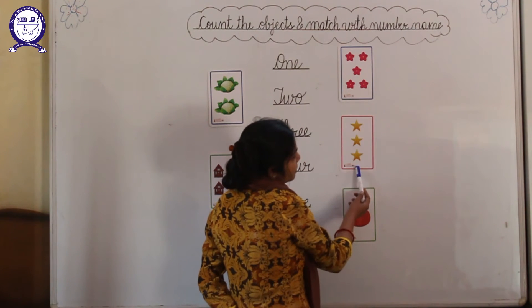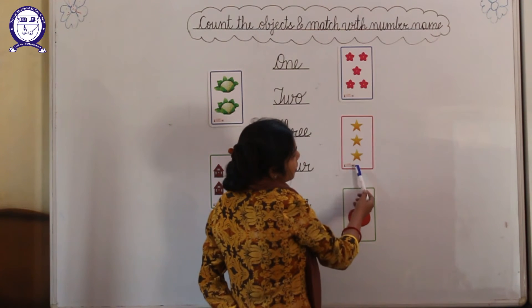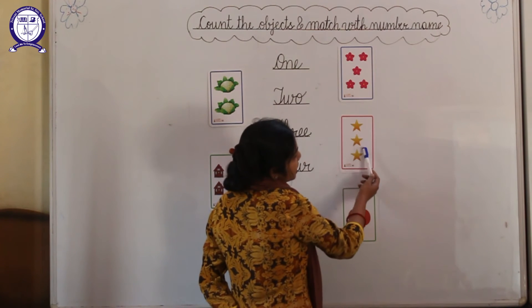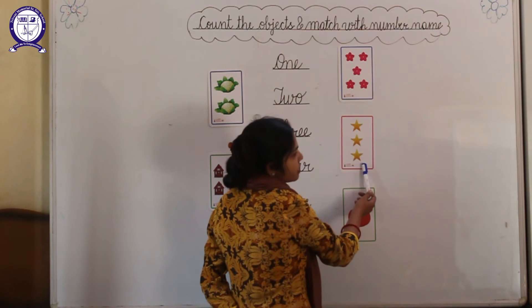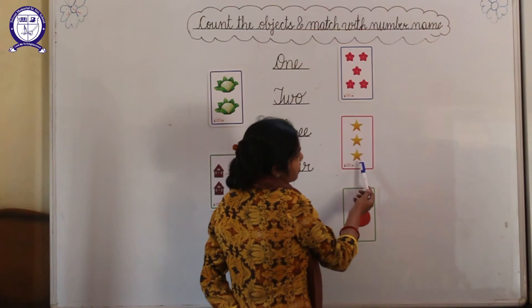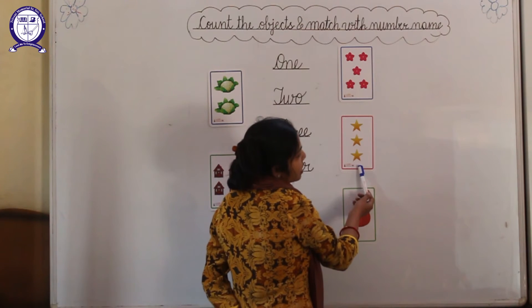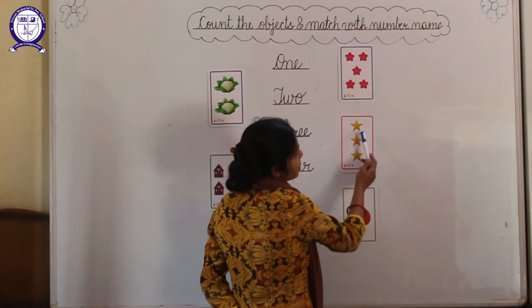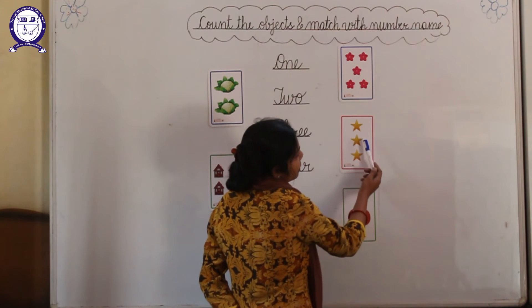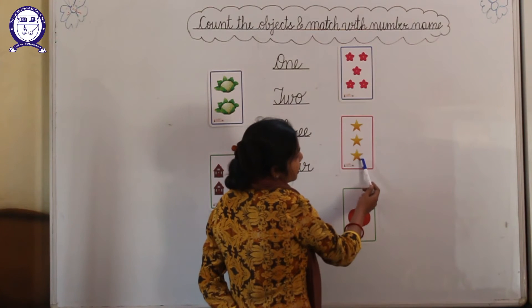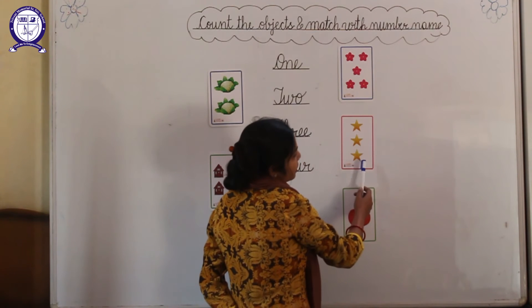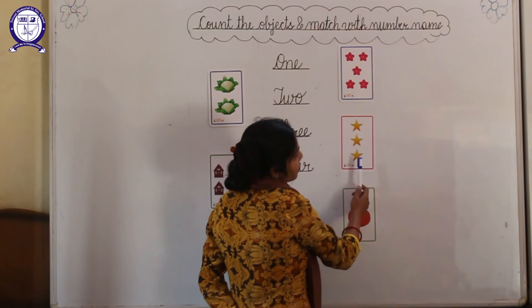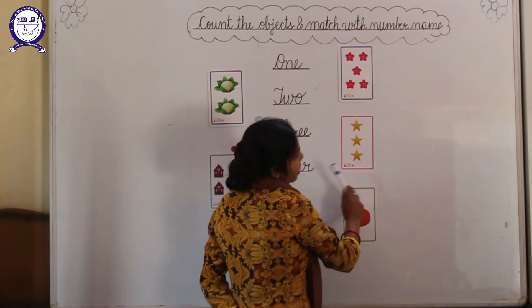And next beta, which picture is this? These are stars. How many stars are there? 1, 2, 3. There are 3 stars.